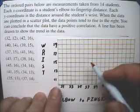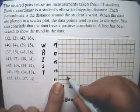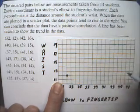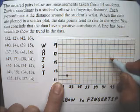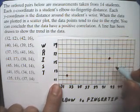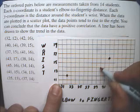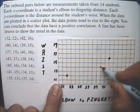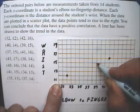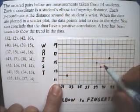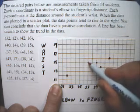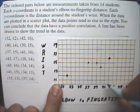So the first point is 32, 12, right there. 42, 16, right there. 40, 14. 39, 15. 37, 15. 41, 16.